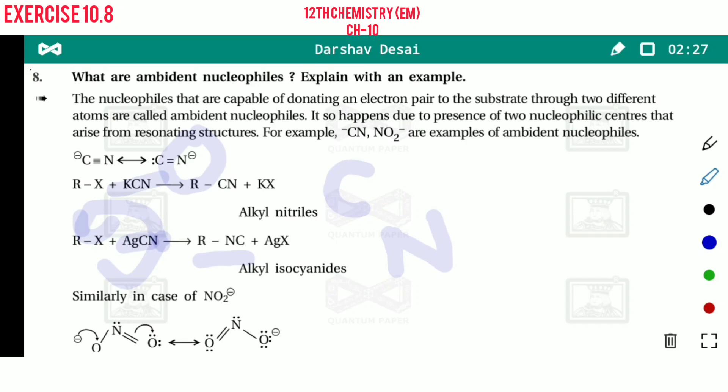If nitrogen acts as a nucleophile, then R-N-C is formed. And this one is called alkyl isocyanide.